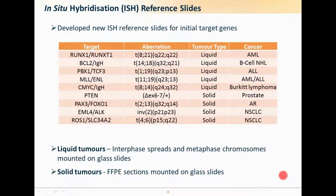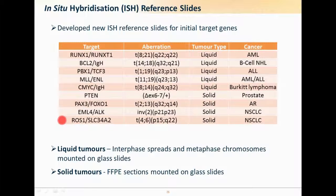We've initially focused on FISH slides covering different translocations and one deletion — PTEN deletion. Among the most interesting is the EML4-ALK translocation and the corresponding ROS1 translocation. Mutations typically found in solid tumors are made as FFPE reference slides, and those found in liquid tumors are prepared as interphase spreads, with metaphase spreads available on request.